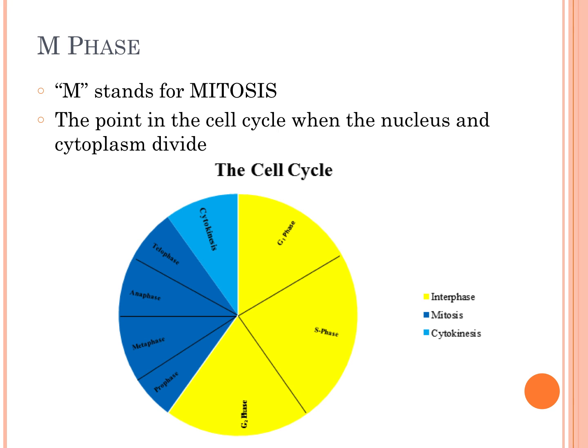Then we have the M phase, shown in blue. Yellow is interphase, dark blue is mitosis, and light blue is cytokinesis. The M phase stands for mitosis, which is the part where the nucleus and cytoplasm divide into two new cells.